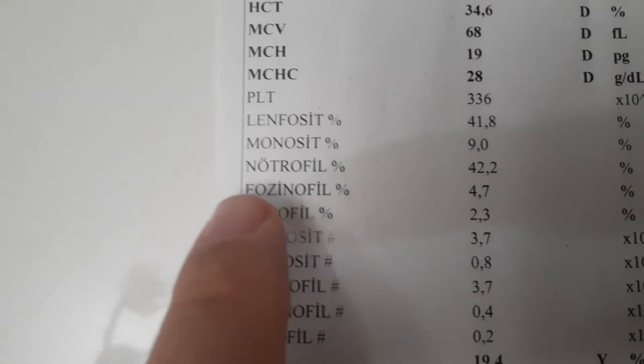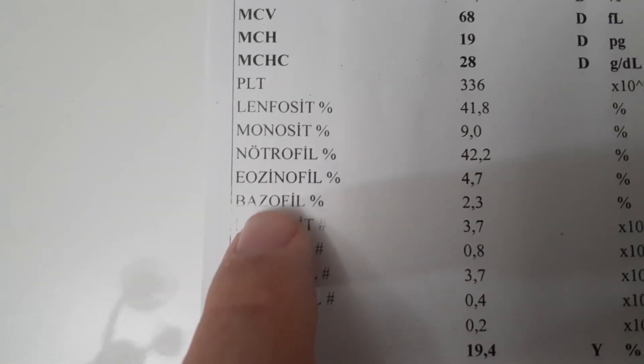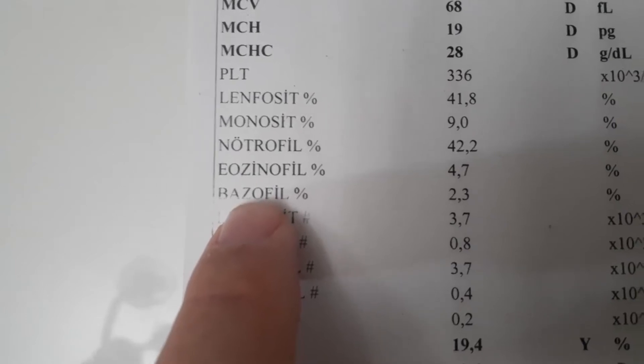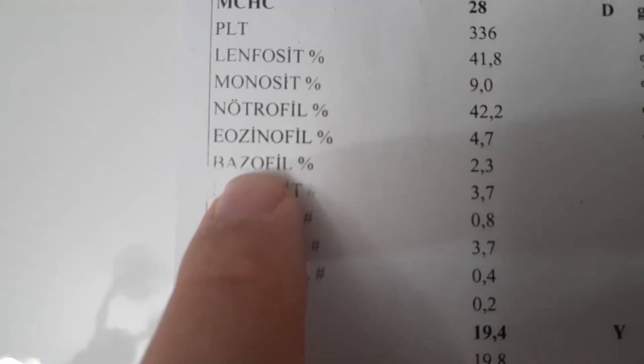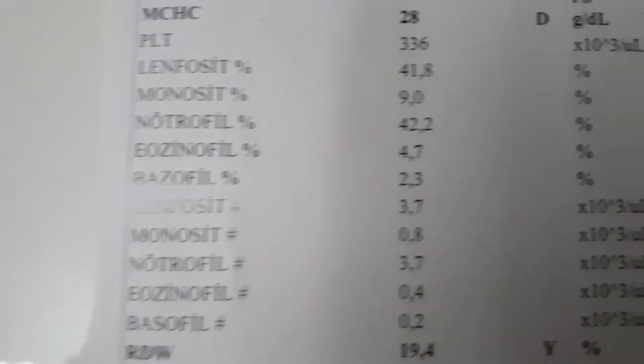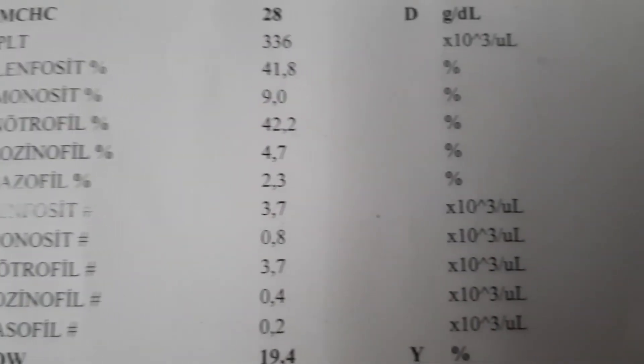Basophil levels may increase in Hodgkin's disease, hypothyroidism, diabetes, spleen removal, and intestinal inflammation. Low basophils are generally seen in acute rheumatic fever, pneumonia, steroid therapy, thyrotoxicosis, or excessive stress — but low basophilia does not have much diagnostic significance.